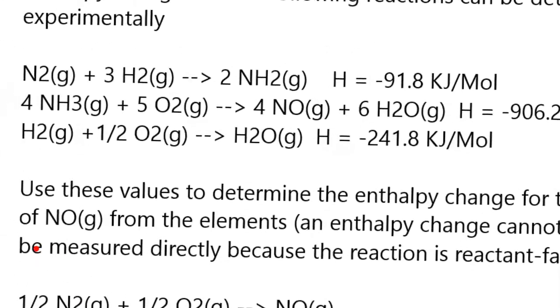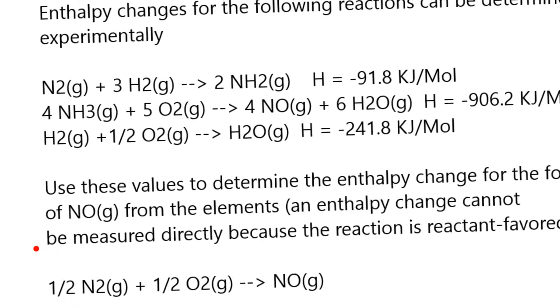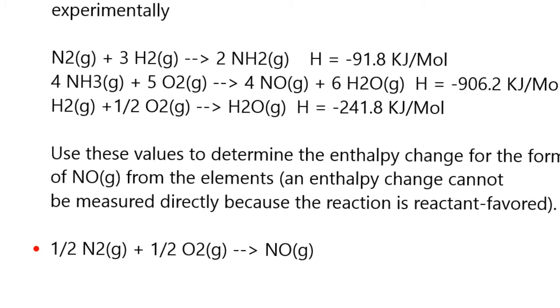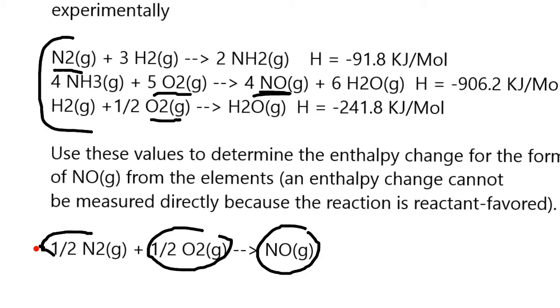Okay, so the first thing I'm going to look at is I need to cancel out some stuff. So what I ultimately need to do in adding my reactions is I need to cancel out so that the only thing I have left are nitrogen, oxygen, and NO. So right here I have nitrogen, right here I have oxygen, right here I have NO. And so what I need to do is add these three equations together in such a way that everything else cancels out.